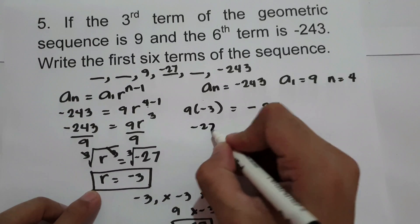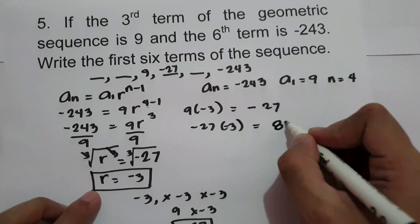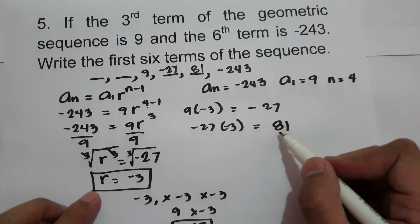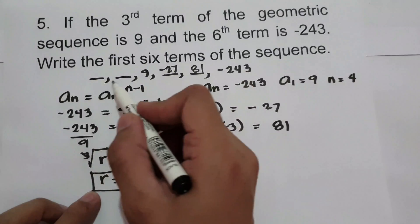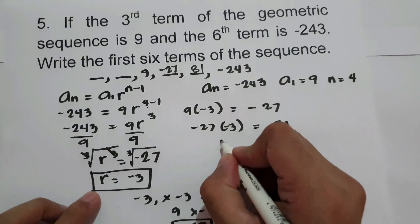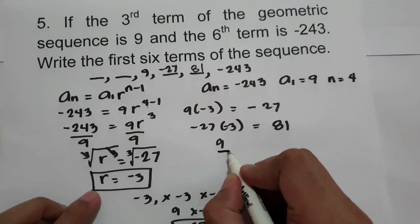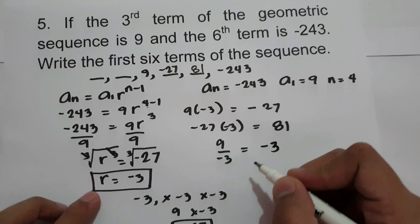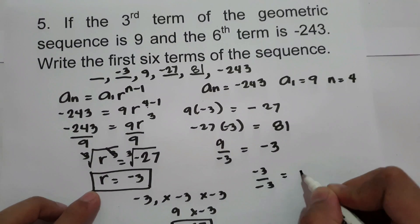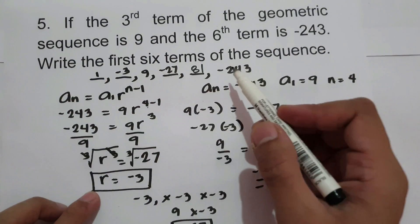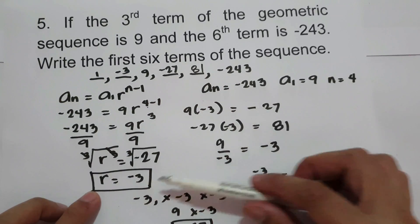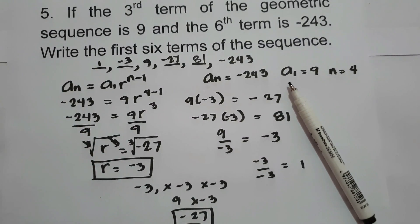With the common ratio negative 3, multiply from the 3rd term forward: 9 times negative 3 equals negative 27 (4th term); negative 27 times negative 3 equals 81 (5th term); 81 times negative 3 equals negative 243 (6th term, confirmed). For the first two terms, divide backwards: 9 divided by negative 3 equals negative 3 (2nd term); negative 3 divided by negative 3 equals 1 (1st term). So the first six terms are: 1, negative 3, 9, negative 27, 81, and negative 243.